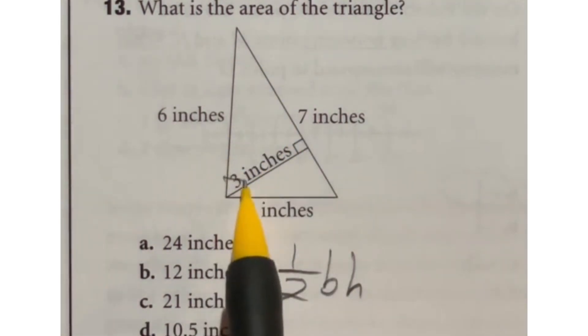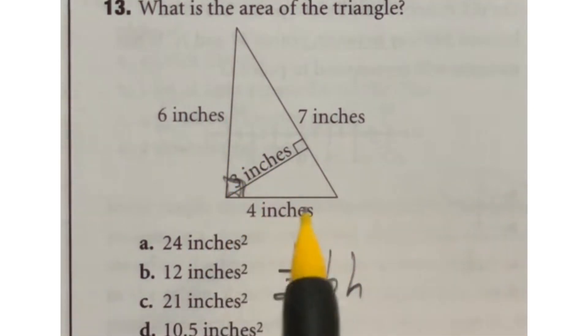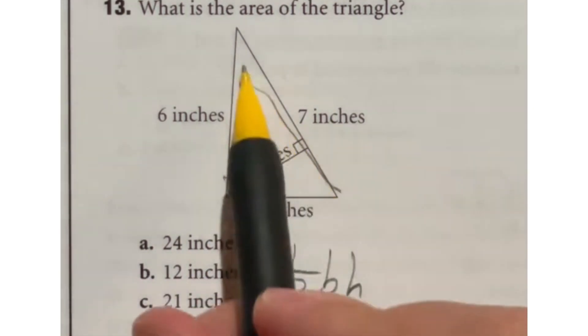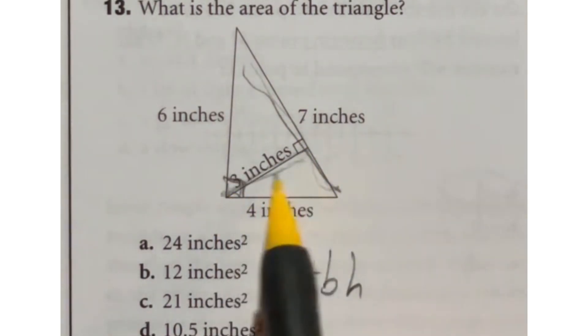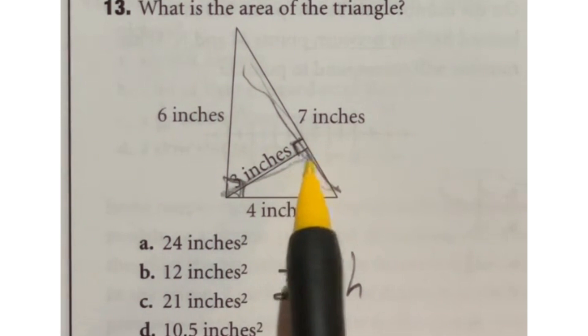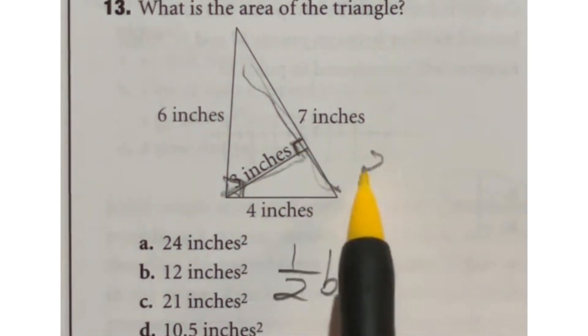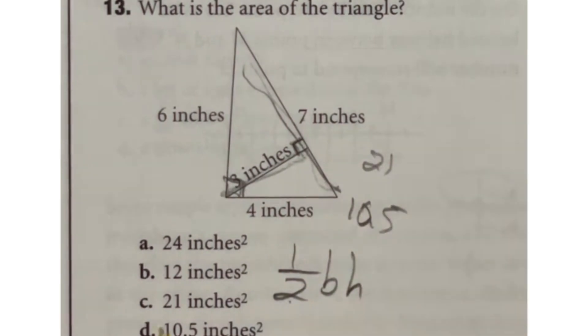But we have no guarantee that this is a right angle. So we don't know if this is actually the height of anything. You have to actually turn it on its side and look at this as the base of this triangle. And you're going to do 7 times that height, which we are guaranteed is a right angle right here. So 7 times 3 gives me 21. We still have to do half of that. So that's going to give us 10.5, which is answer D.